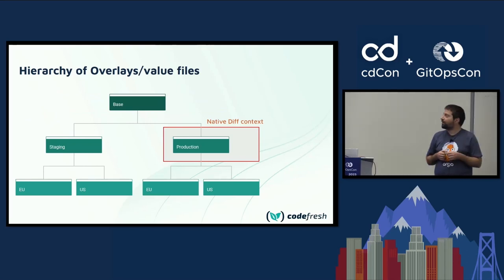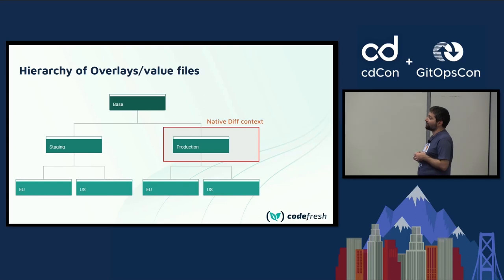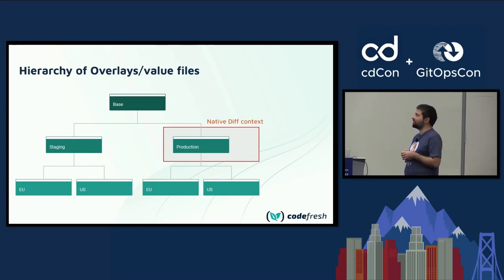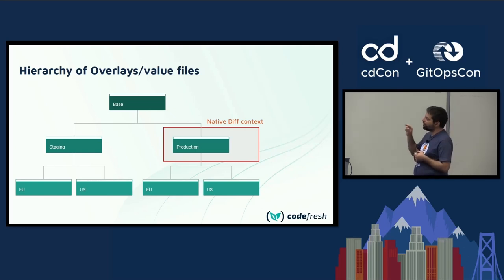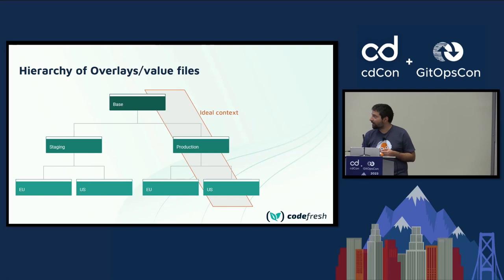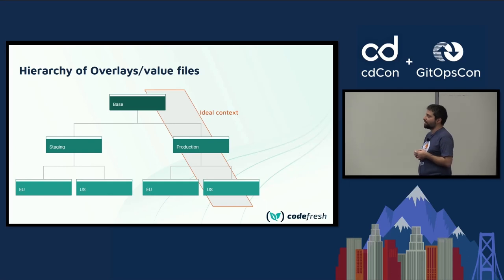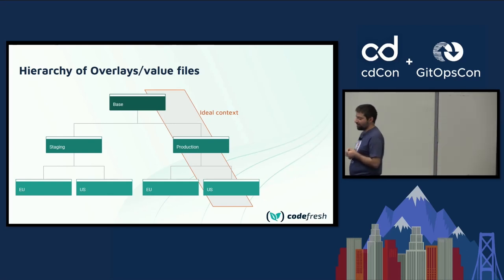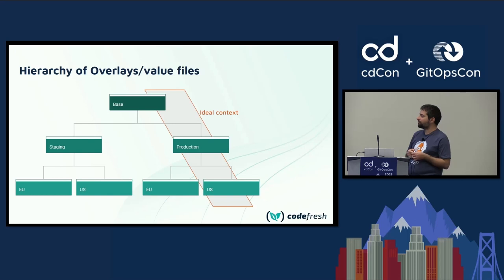This is the scenario we are talking about. You have a structure of Kustomize overlays — a base overlay, overlays for staging and production, and downstream overlays for different regions. Or you can imagine the same example with Helm values and hierarchies. By the time you look at a pull request and need to approve it, your context is only the overlay or the Helm value for the change, which is not enough. Ideally, you would like to have the full context, know the whole hierarchy, and know the actual change — because then you can make an informed decision. This is a problem we're going to talk about today, and I'm going to show four solutions: three wrong ones and the correct one.